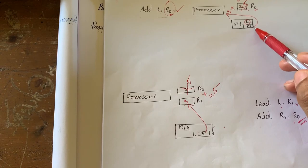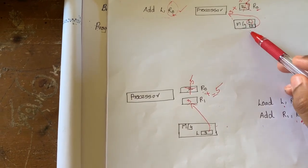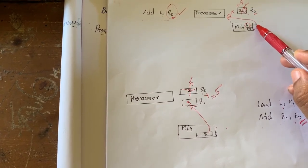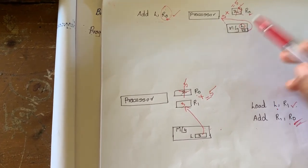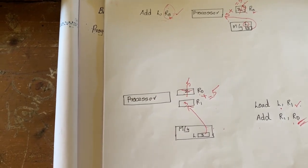Consider both situations together. In both cases, after completing the operation, the value of R0 gets replaced with the resultant value 5. Also note that in both cases, the memory value at location L is preserved — it is not modified by either operation.